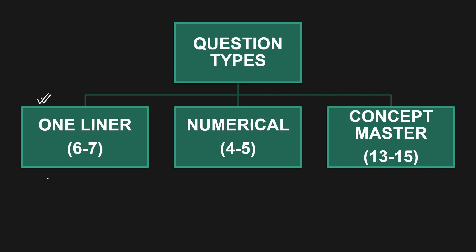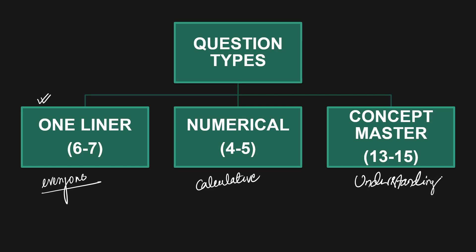First, one-liners that everyone is able to solve. Second, numericals — a bit calculative. Third, concept masters, which require a lot of understanding. If you are unable to decode the language of the question, you struggle. Six to seven questions come from one-liners, four to five are calculative, and thirteen to fifteen questions are concept-based.